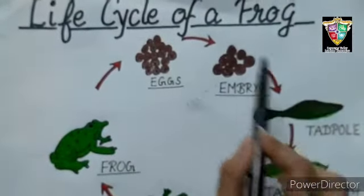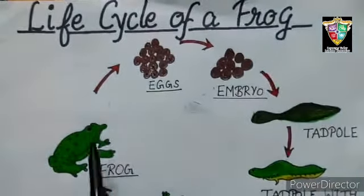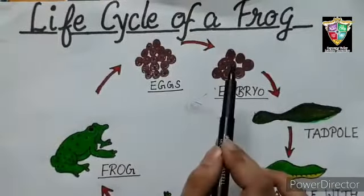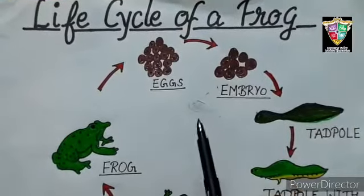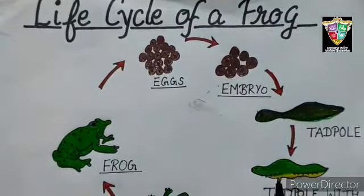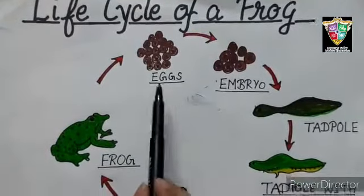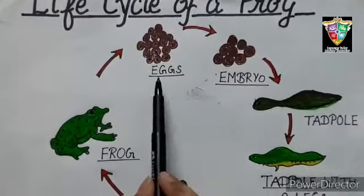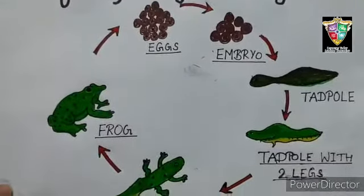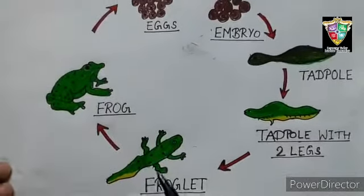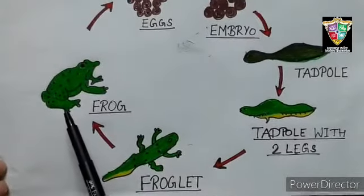This diagram shows the complete life cycle of a frog. There are four stages in the life cycle of a frog: Egg, Tadpole, Froglet, and Frog.